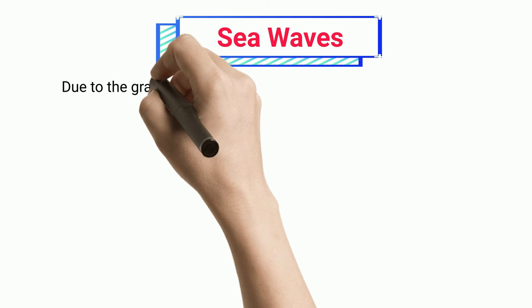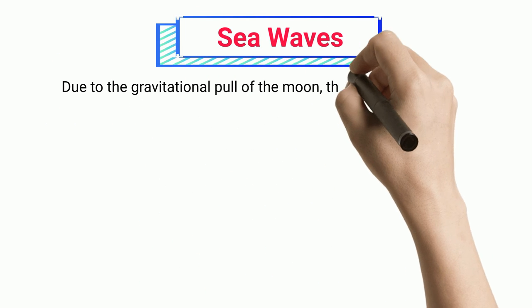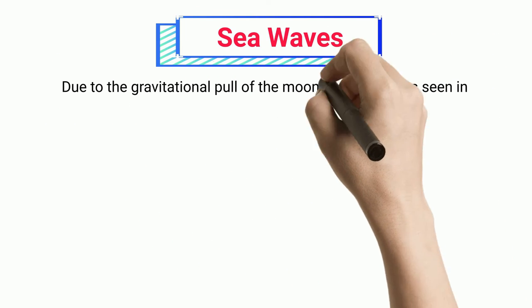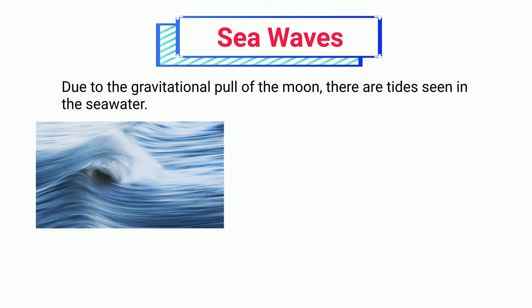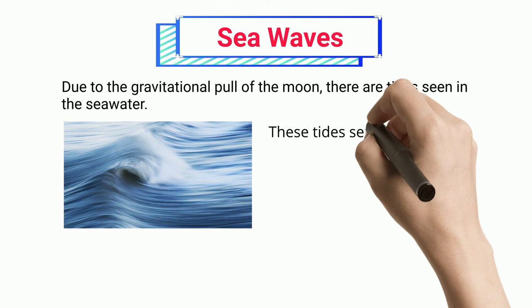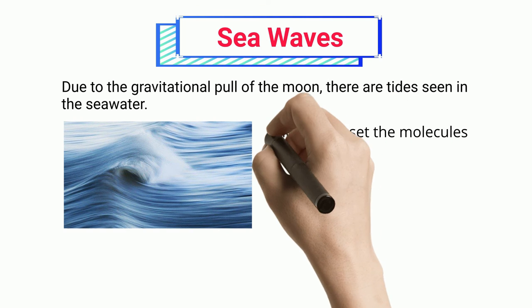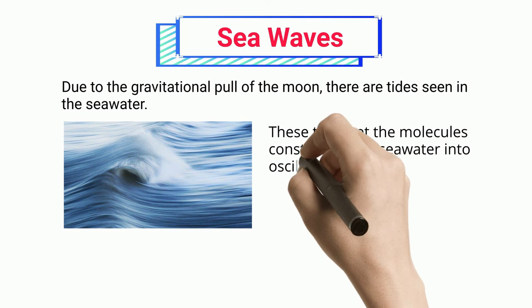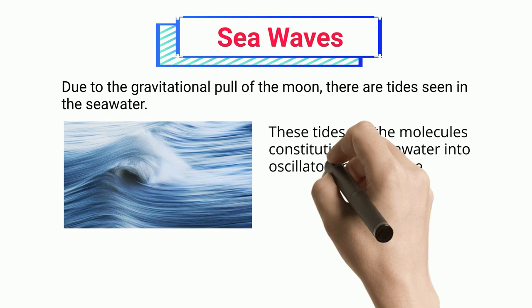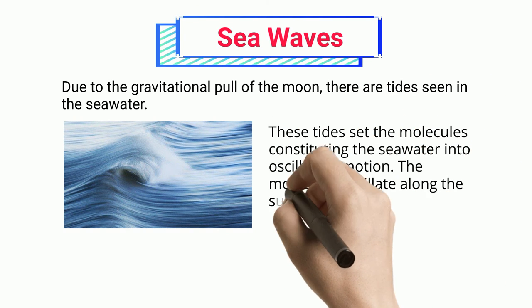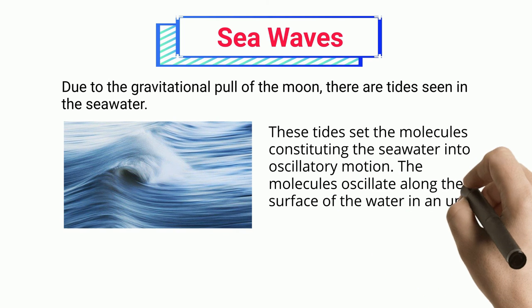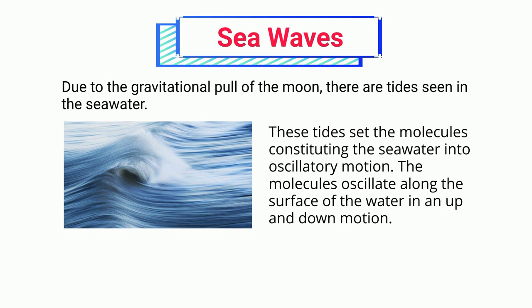Sea Waves. Due to the gravitational pull of the moon, there are tides seen in the seawater. These tides set the molecules constituting the seawater into oscillatory motion. The molecules oscillate along the surface of the water in an up and down motion.